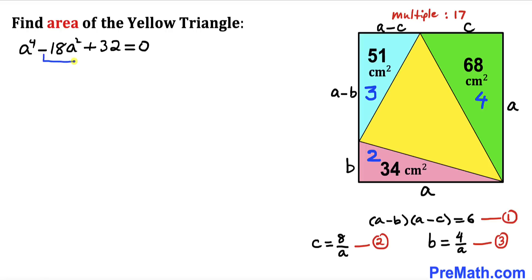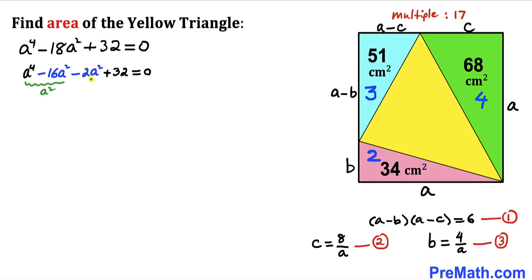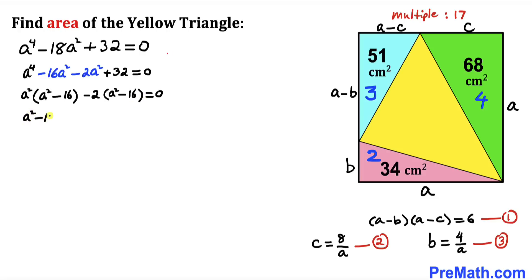Let's factor this equation. We can split the middle term: −18a² = −16a² − 2a². Grouping the first two terms, a² is a common factor giving a²(a² − 16). For the last two terms, −2 is common, giving −2(a² − 16). So we get (a² − 16)(a² − 2) = 0. Setting each factor to zero: a² − 16 = 0 and a² − 2 = 0.